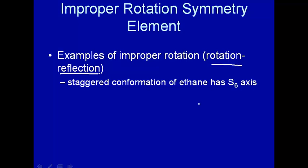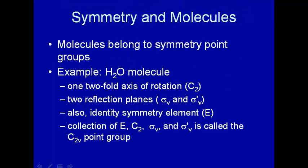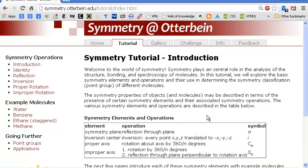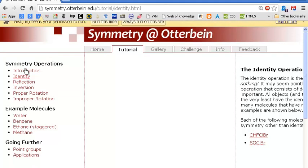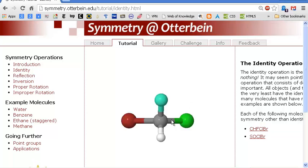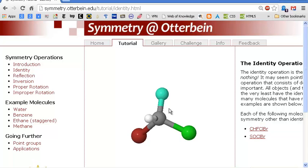There are a lot of things online you can look at, and I've highlighted a particular website from Otterbein, a small liberal arts college in Ohio outside of Columbus, which is fairly good at explaining these symmetry elements. Let's look at these symmetry elements in 3D. Looking at identity: any molecule — here's a funny-looking molecule — has an identity. The identity operation means you just do nothing.